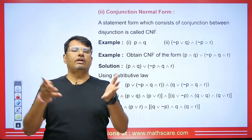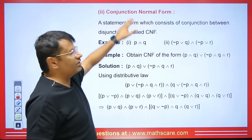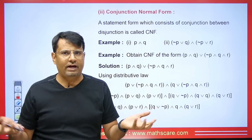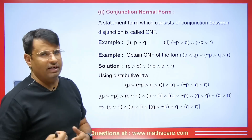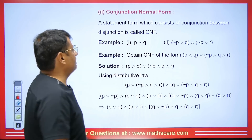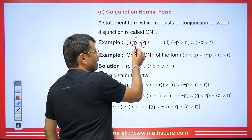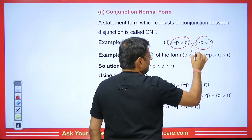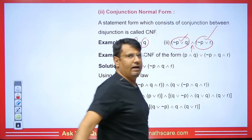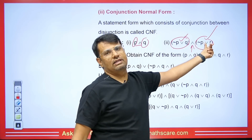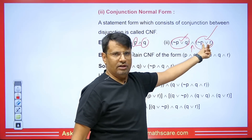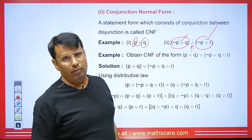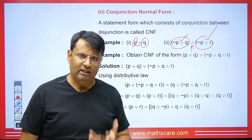Conjunction normal form means conjunction between disjunctions. It means we will have AND signs for conjunction and the rest will be OR signs, with AND sign between those groups. For example, we have two statements connected by OR signs within each group, and AND sign between the groups — that is conjunction between disjunctions. This is known as conjunction normal form, denoted as CNF.